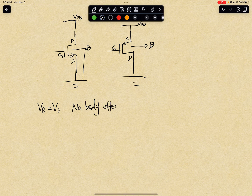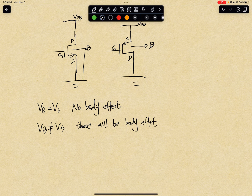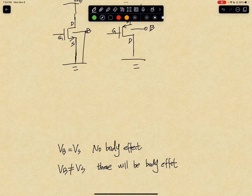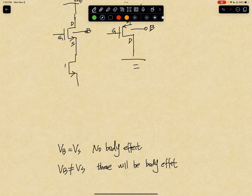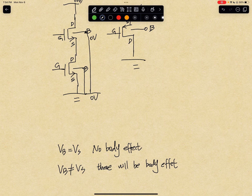We can talk about body effect later — it will change the capacitance and the small signal analysis. If VB does not equal VS, there will be a body effect. How does that happen? For example, if you have two transistors together — gate, source, drain, body — the body is always connected to ground, so the body will be zero volts. However, the source is not zero volts, so VS does not equal VB, and there will be a body effect. The different parameters in the small signal analysis and equations will be different in this case.